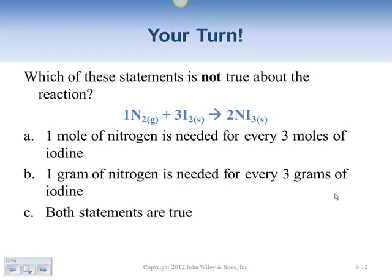Which of these statements is not correct about this reaction? Statement one: one mole of nitrogen is needed for every three moles of iodine — that's a one-to-three ratio, and yes, nitrogen to iodine is one to three, so that's correct. Statement two: one gram of nitrogen is needed for every three grams of iodine — no, we don't know that. The balanced equation only gives us mole relationships, not gram relationships. We haven't done any calculations to determine grams yet, so that statement is not correct.